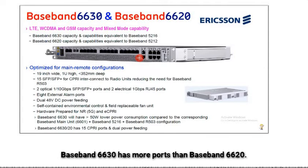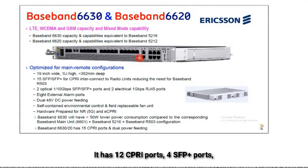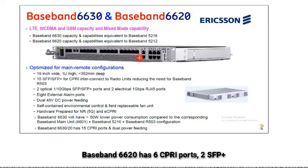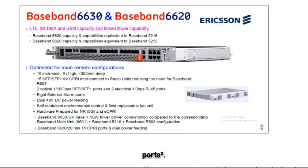Baseband 6630 has more ports than Baseband 6620. It has 12 CPRI ports, 4 SFP+ ports, 2 RJ45 ports, and 2 USB ports. Baseband 6620 has 6 CPRI ports, 2 SFP+ ports, 2 RJ45 ports, and 2 USB ports.